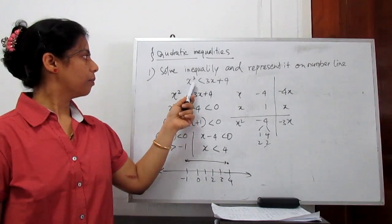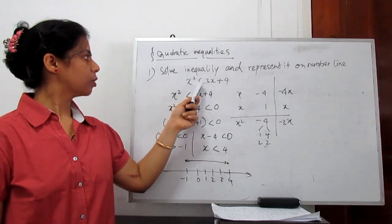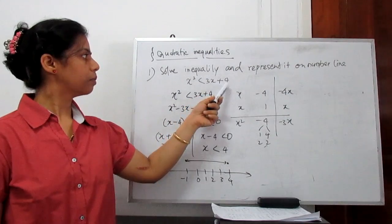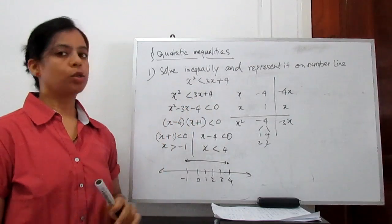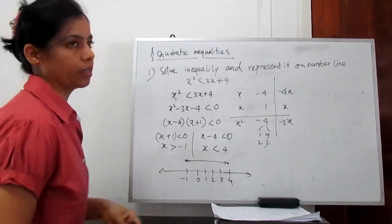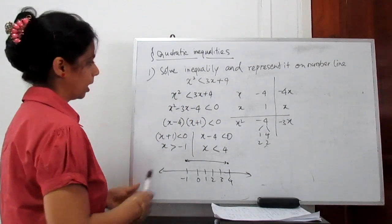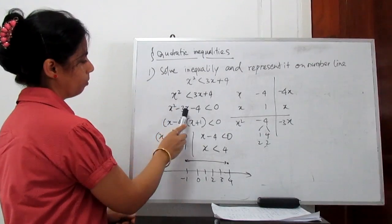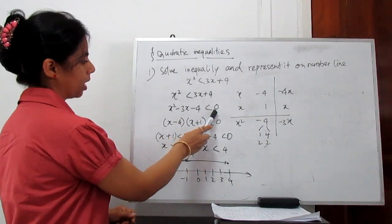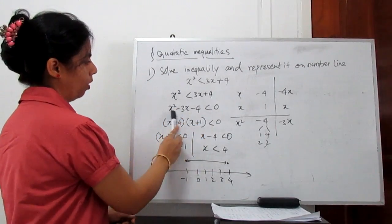The given inequality is x squared is less than 3x plus 4. Take all the terms to one side, so it becomes x squared minus 3x minus 4 is less than 0.